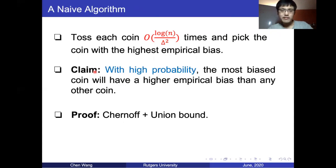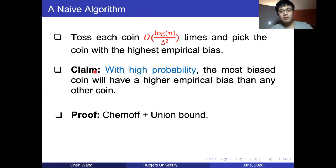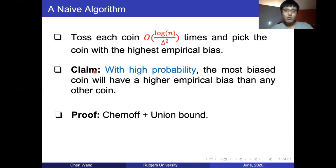The problem has a naive solution. We can simply toss each coin O(log N / δ²) times and pick the one with the highest empirical bias. By a simple Chernoff and union bound argument, we can show that with high probability the picked coin will be the most biased coin. The drawback is that tossing each coin O(log N / δ²) times seems a little too much — but it turns out we can improve on that.